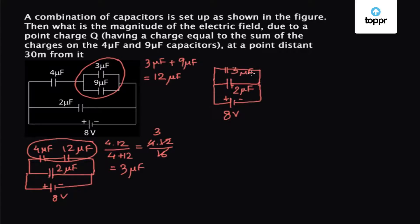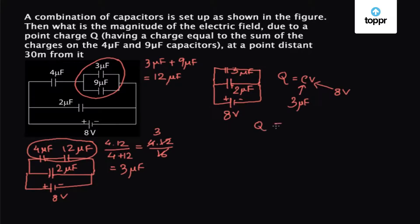The charge developed on the 3 microfarad capacitor can be given by Q equals CV, where C is 3 microfarad and V is 8 volts, since the 3 microfarad capacitor and the 2 microfarad capacitor are connected in parallel. So the voltage across both these ends will be equal to 8 volts, giving us the charge on the 3 microfarad capacitor equal to 24 microcoulombs.